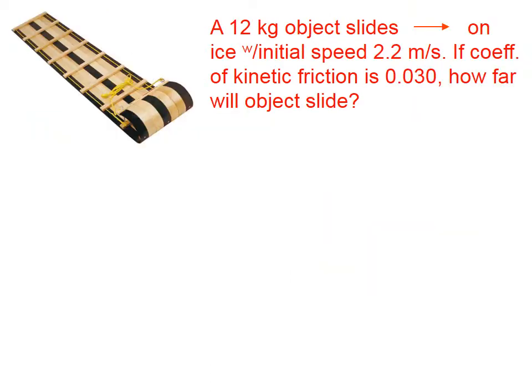Let's try another one. A 12-kilogram object slides horizontally on ice with an initial speed of 2.2 meters per second. If the coefficient of kinetic friction is 0.030, how far will the object slide? Again, because we have friction, conservation of energy is not an option, so let's fill in what we can with the work-kinetic energy theorem. We're given the mass of the object. We're told that its initial speed is 2.2 meters per second. Again, we have a coefficient of friction of 0.030,